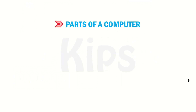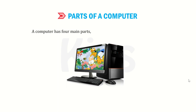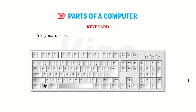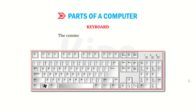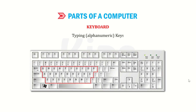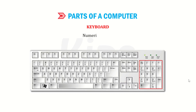Now we shall discuss about parts of a computer. A computer has four main parts which help in performing the IPO cycle. A keyboard is used to type data and instructions into the computer. The commonly used keyboard has 104 keys, which can be divided into many groups based on their functions: typing alphanumeric keys, control keys, function keys, navigation keys, and numeric keypad.